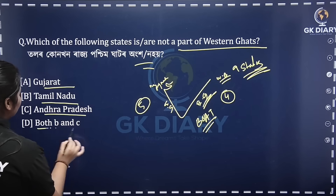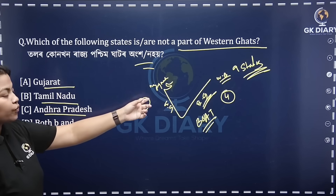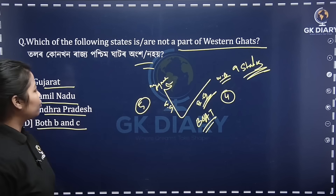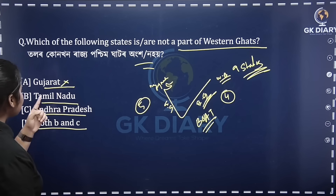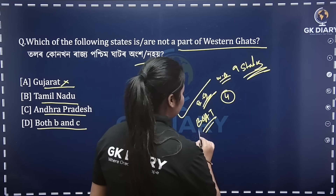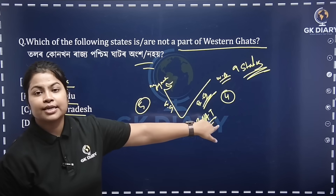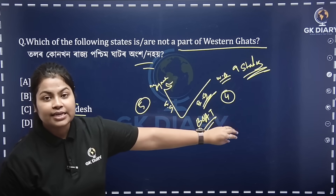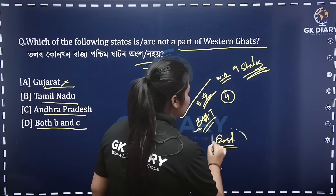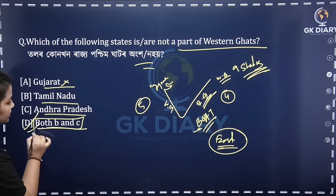The options are Gujarat, Tamil Nadu, Andhra Pradesh, or both B and C. If you want to go to the Western Ghats, then Gujarat will be the starting option. For Eastern Ghats, the trick is BOATe: B for Bangalore/Odisha, O for Odisha, A for Andhra Pradesh, T for Tamil Nadu. So A and T — Tamil Nadu and Andhra Pradesh — are Eastern Ghats. The correct option is both B and C.